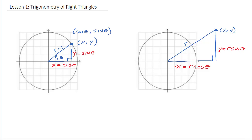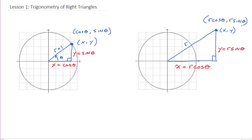At this point up here, instead of calling it x and y, we could actually find its coordinates by going r cos theta and r sine theta. So what we're doing is taking what we learned before and thinking about it more in terms of just a triangle.